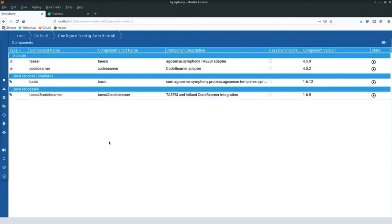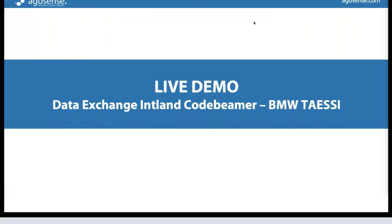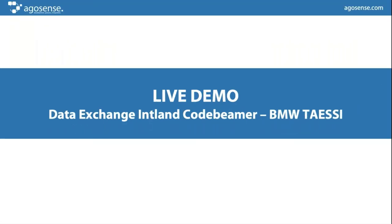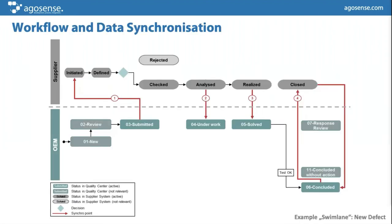Thank you, Christian. To get back to my slides — what you have seen in the previous demo, like the state transition slide, is already implemented in the process template. You don't have to care anymore about how your mappings or process have to be set up. For BMW and for all the other OEMs where we have adapters, everything is more or less ready out of the box — it's about less than a day of configuration work to start the first project, and adding additional projects is only a few mouse clicks away.